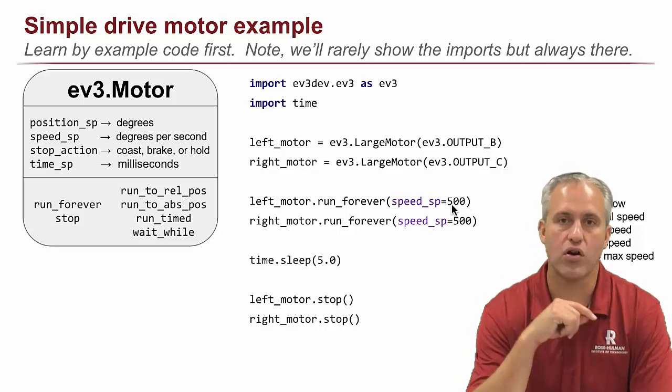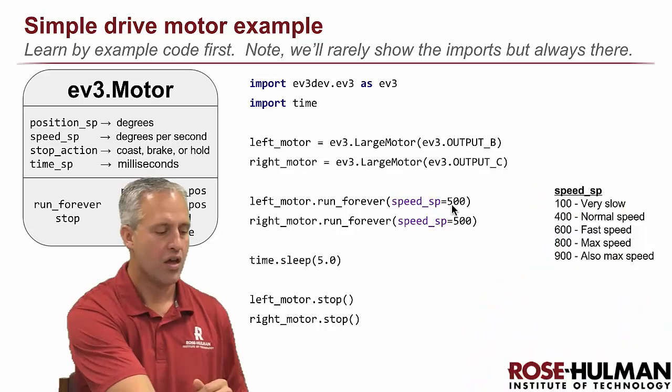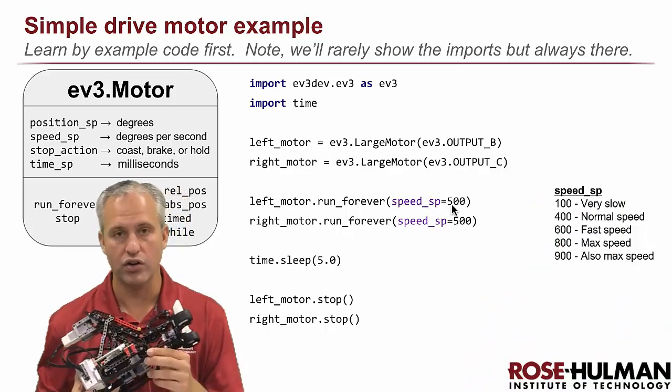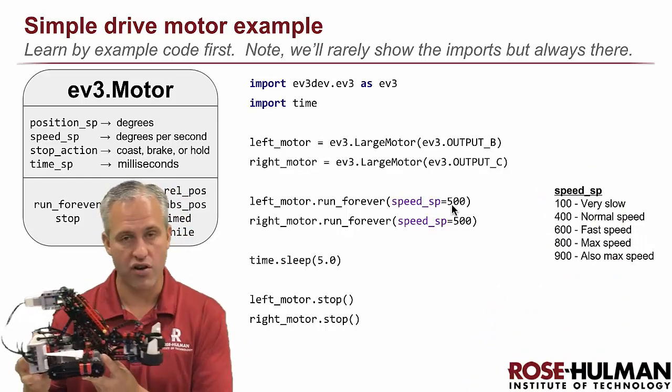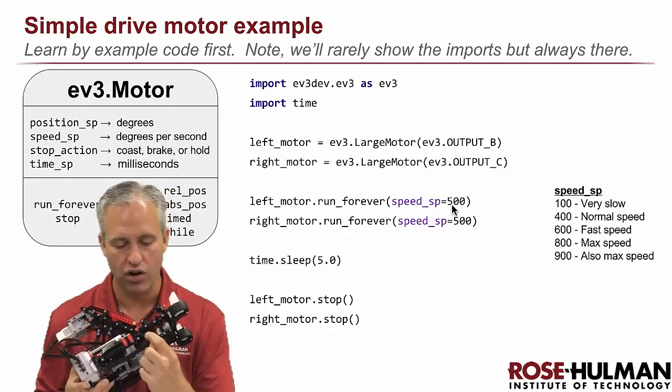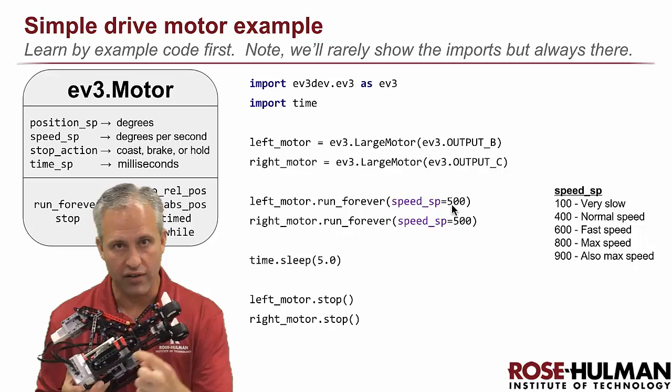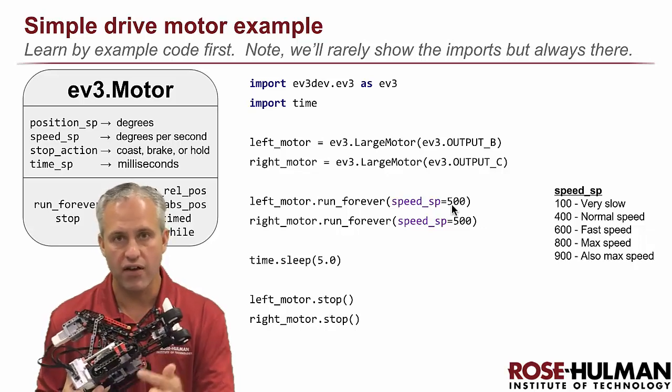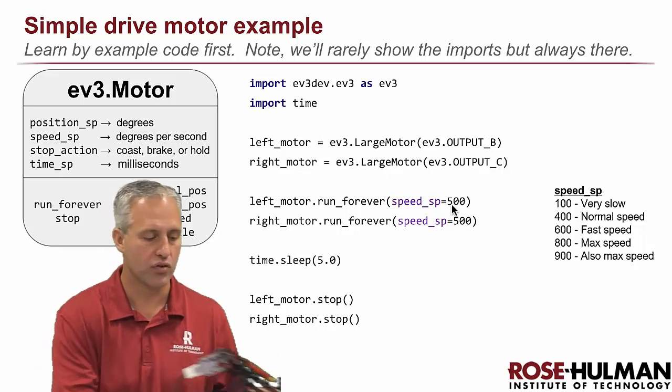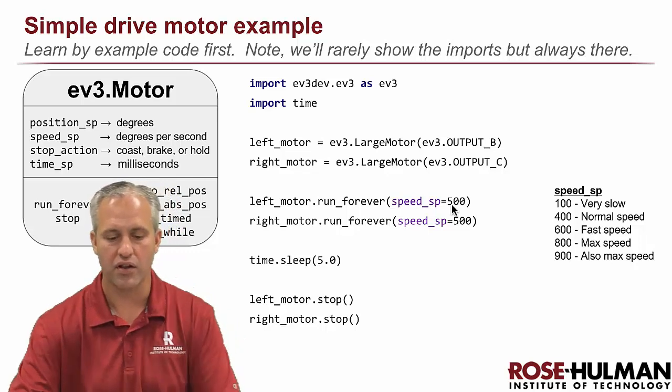It sets the speed. The units on the speed are degrees per second. So they have no idea how your wheels are connected. So the units are not inches per second. The units are degrees, like this motor turning. How fast does this motor turn? So it's going at 500 degrees per second. So a little over a lap, a little bit less than two laps.